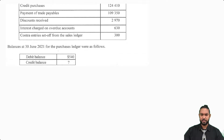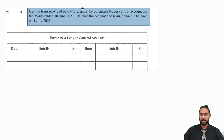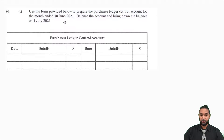At 30th June 2021, we have a closing debit balance but we need to figure out the closing credit balance. We need to use the format provided to prepare the purchases ledger control account for the month ended 30th June 2021, balance the account, and bring down the balance on 1st July 2021.